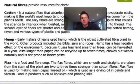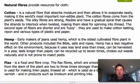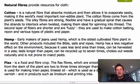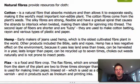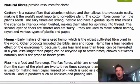Now, cotton is a natural fiber that absorbs moisture and allows things to evaporate easily. It's considered the world's most important non-edible plant. The cotton fibers come from the plant's seeds — the silky fibers are strong, flexible, and have a gradual spiral that causes the strands to interlock when twisted, making them ideal for spinning into thread. A second layer of shorter, fuzzy fibers is used to make cotton batting, rayon, and various types of plastic and paper. So cotton is used for many different things, and it's not just one part of the plant that's used.